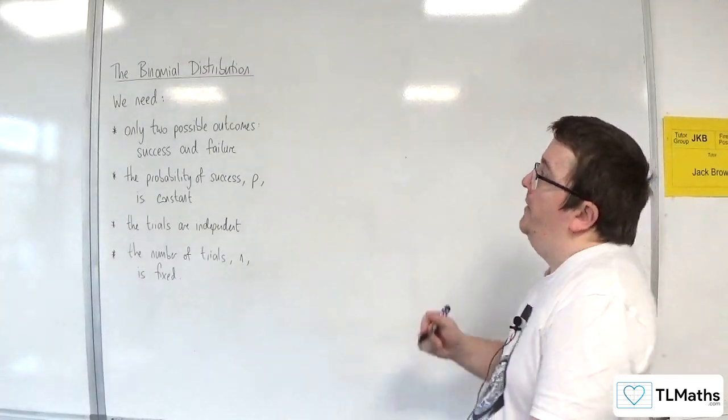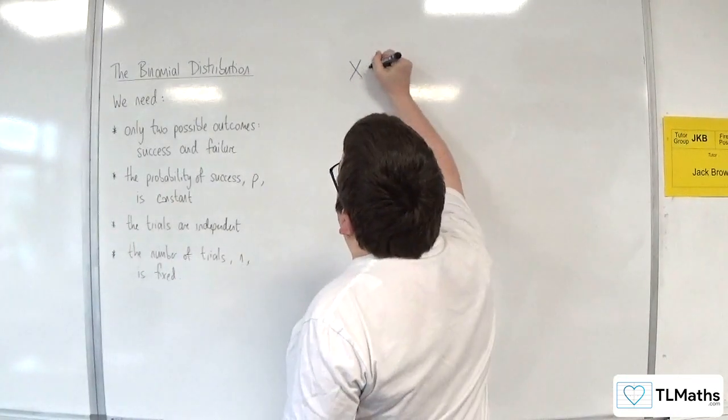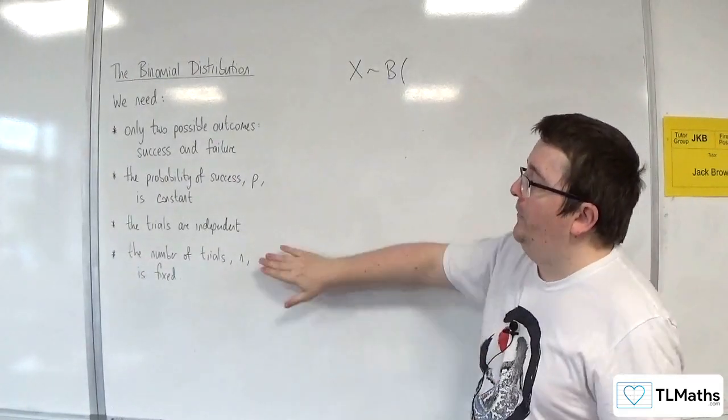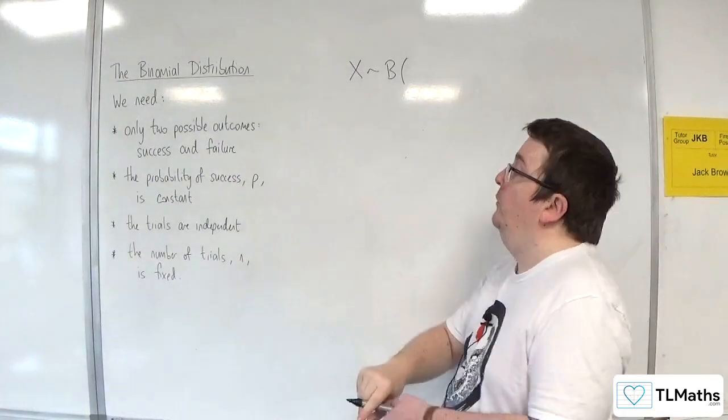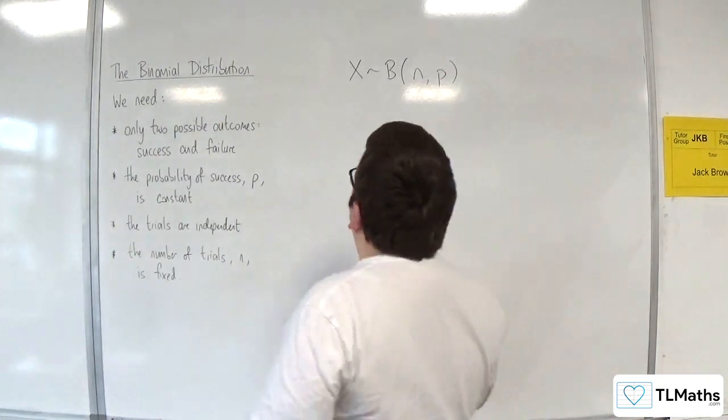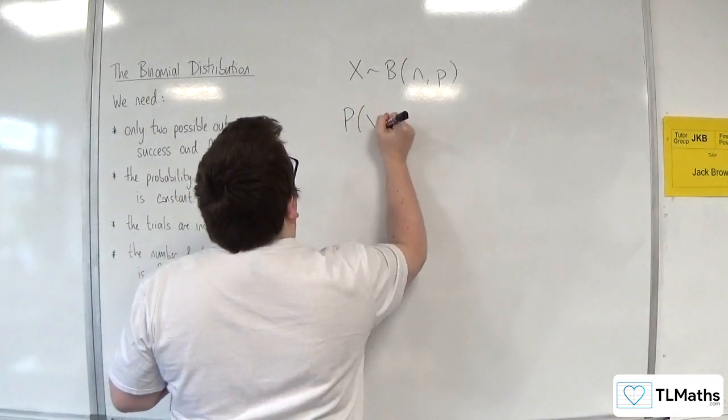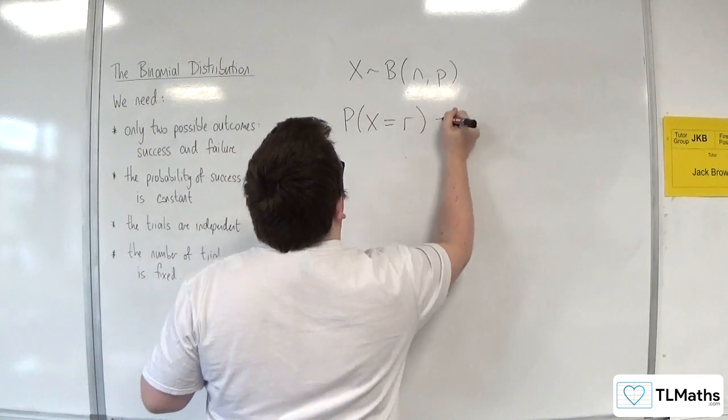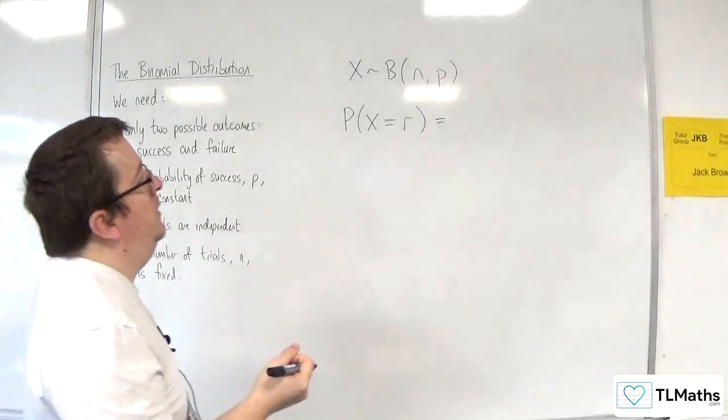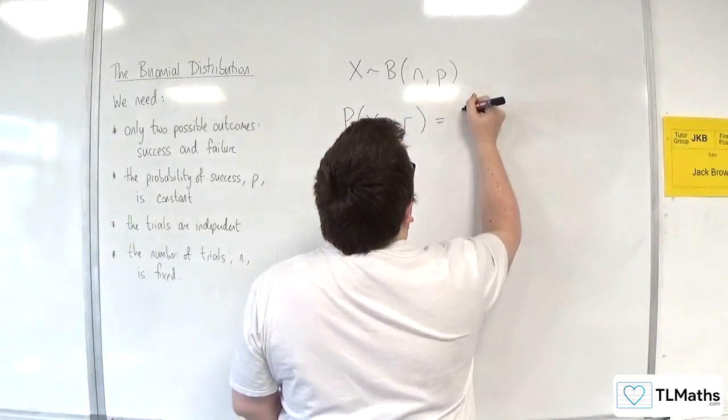How we write it is we say X is binomially distributed and it has these two parameters. We need both of those, so N and P. And then the probability of X being equal to R. So this is essentially the formula for the distribution, would be nCr.